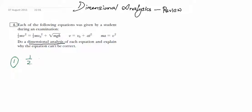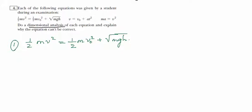The first equation is: half mv squared equals half mv₀ squared plus the square root of mgh. We have to check whether this is consistent. One way of checking whether the equation is correct is by checking whether it is dimensionally consistent.